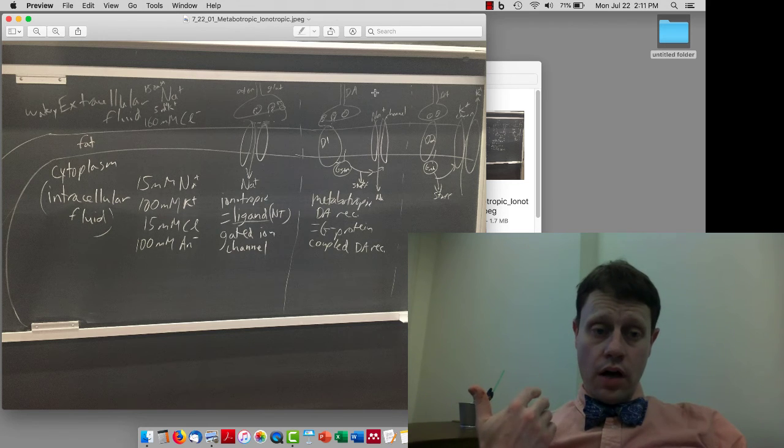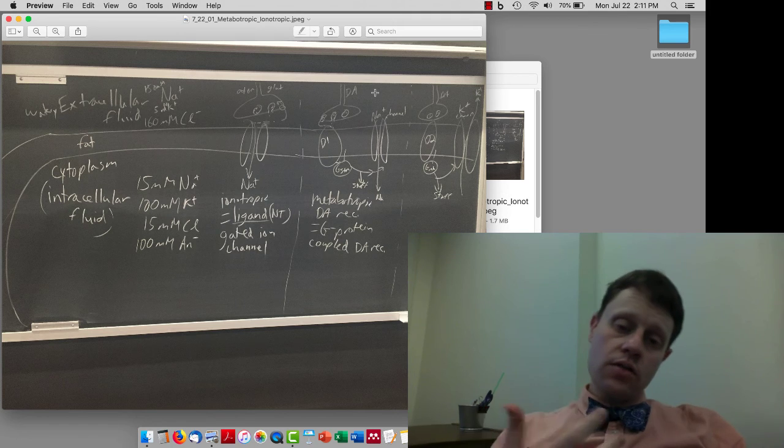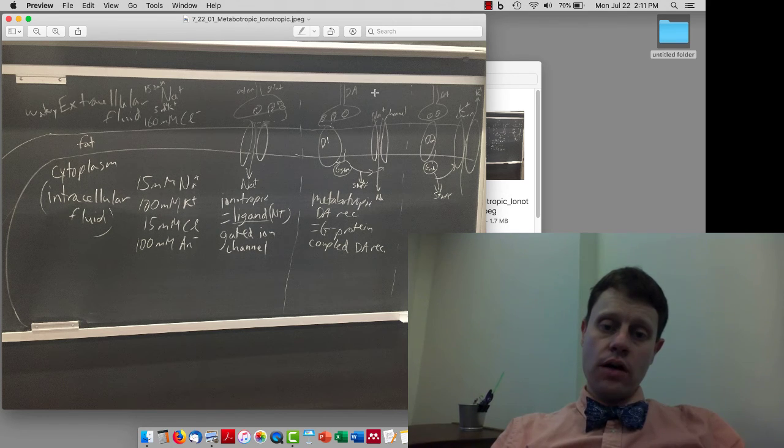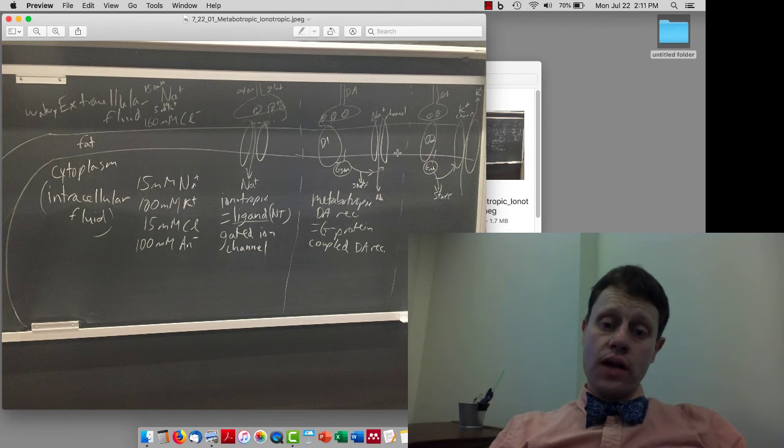First, we talked about ionotropic ion channel receptors, like the glutamate receptors that let sodium in or the GABA receptors that let chloride in, versus metabotropic receptors, which act through G proteins. The receptor indirectly does a lot of complicated things to change metabolism,